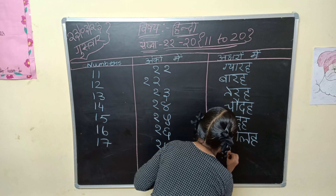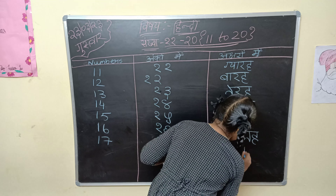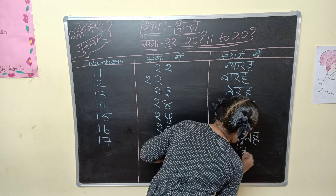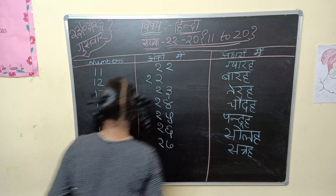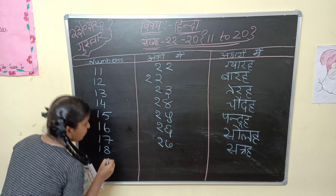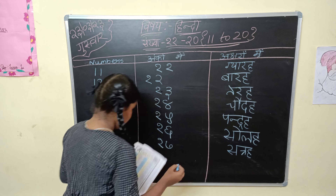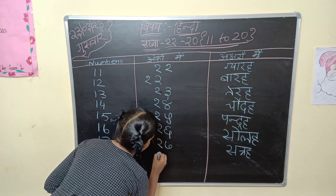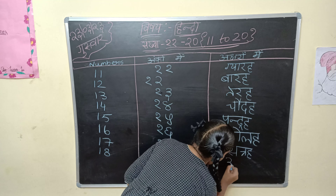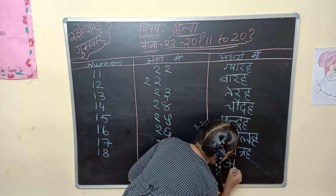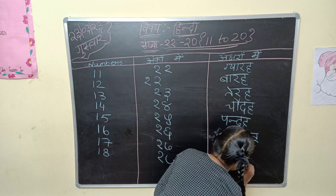Then for 17, satra. Then 18, we say atara. Atara. Atara.